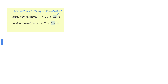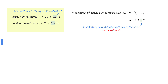The initial temperature is 20 plus or minus 0.5 degrees Celsius, and the final temperature is 10 plus or minus 0.5 degrees Celsius. To find the change in temperature, subtract the two temperatures from each other.